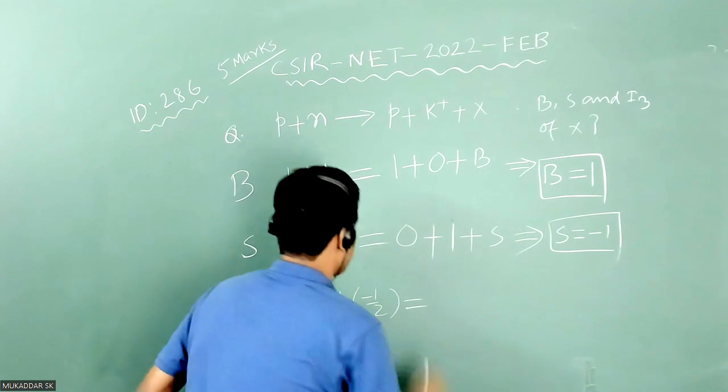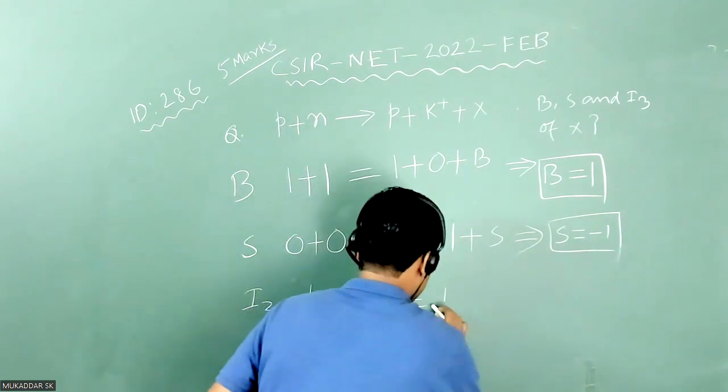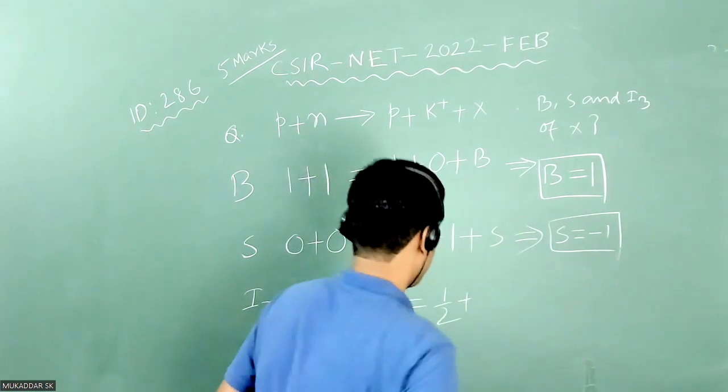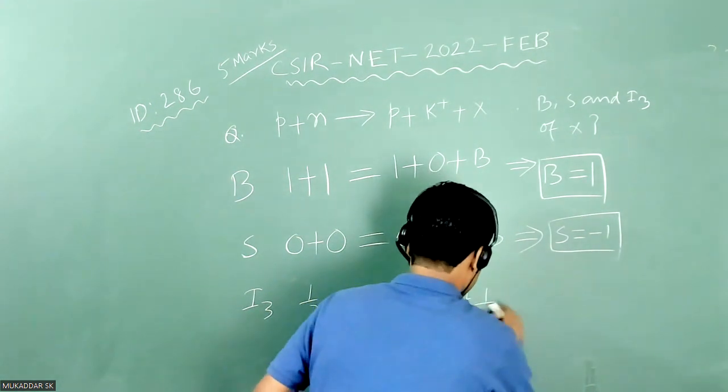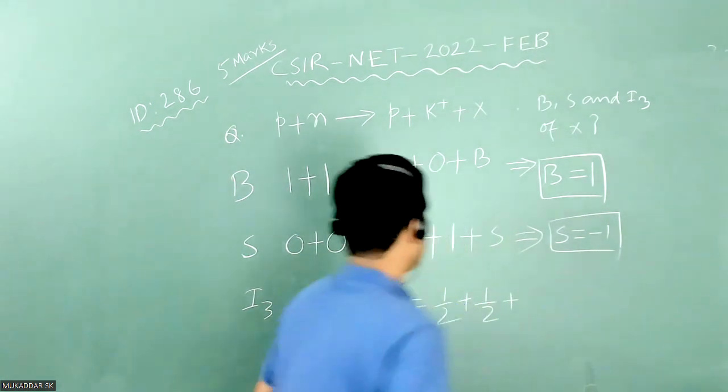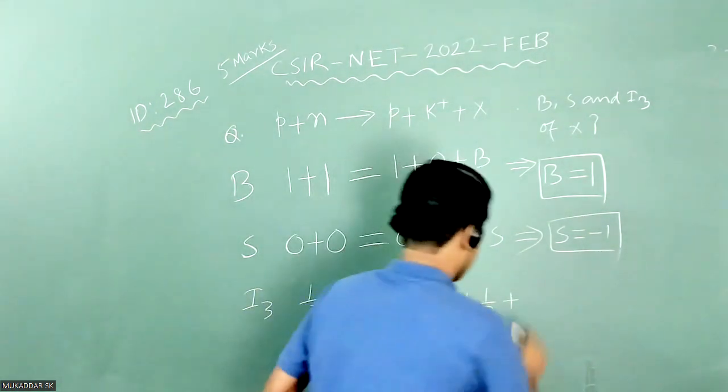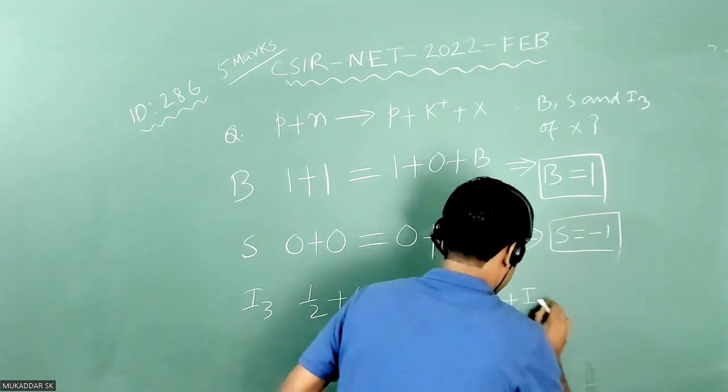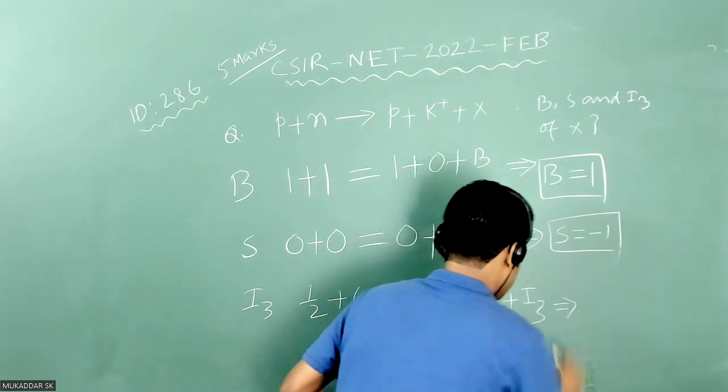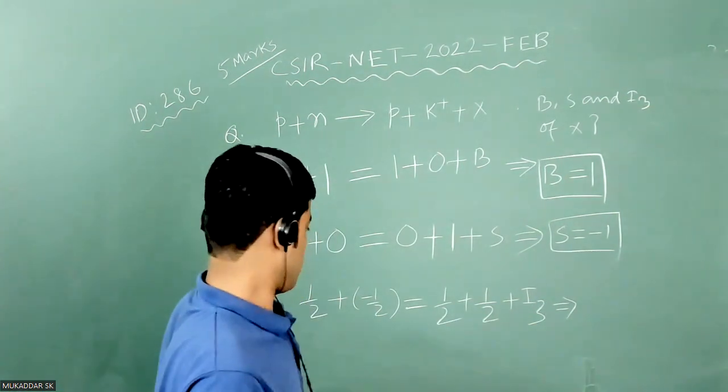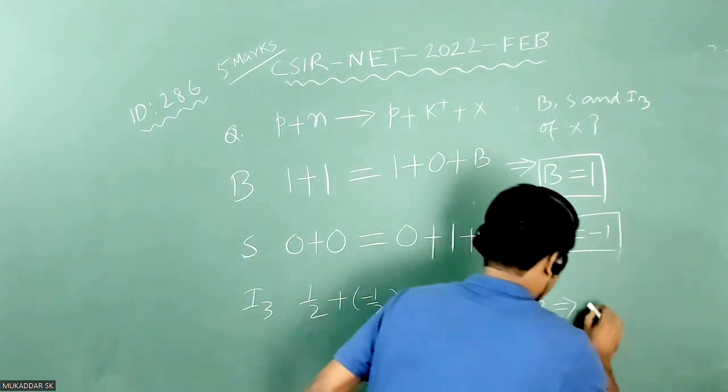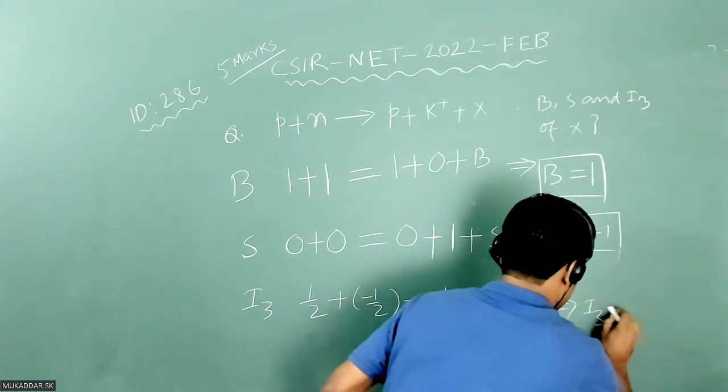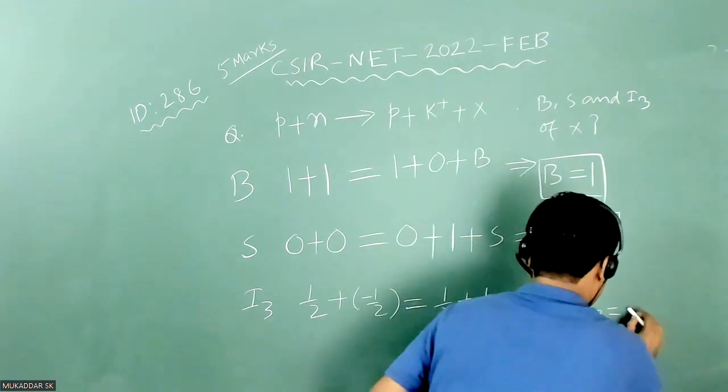On the right hand side you have again proton, so it will be plus half. Same is true for k plus. It is plus half. And let us take i3 of x is simply i3. So this equation will give i3 of x particle will be simply minus one.